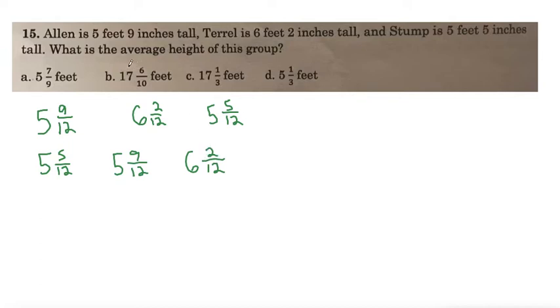So first of all, we can discount option B and C, because they are way bigger than 6 feet. So those are out.